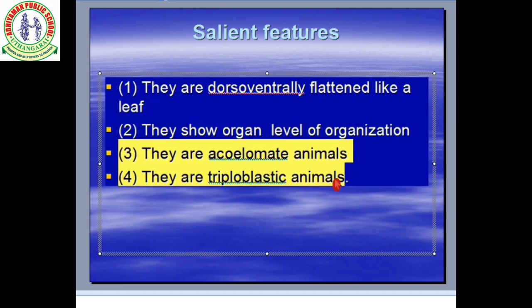They are triploblastic animals. Triploblastic means they have three germ layers: ectoderm, endoderm, and mesoderm. Diploblastic animals have only ectoderm and endoderm as embryonic germinal layers, whereas triploblastic organisms have all three. The organisms formed from these three germinal layers are called triploblastic. Very important point: from Platyhelminthes onwards, all organisms are triploblastic — including Aschelminthes, Annelida, Arthropoda, and so on.